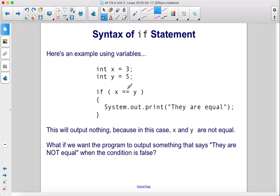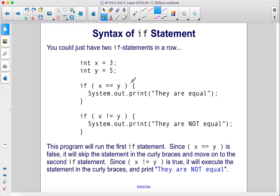This will output nothing because in this case x and y are not equal. What if we want the program to output something that says they are not equal when the condition is false? You could just have two if statements in a row. So if x equals y, print this. If x does not equal y, print this.